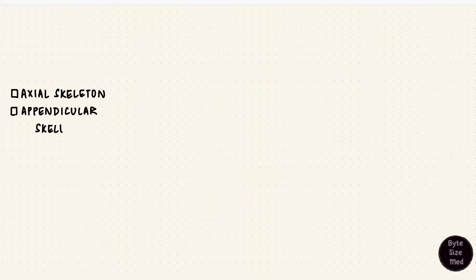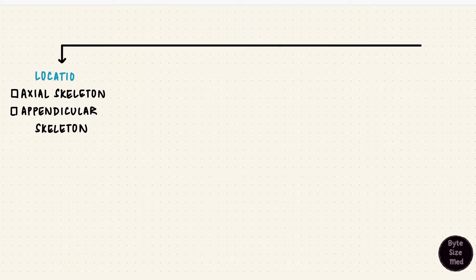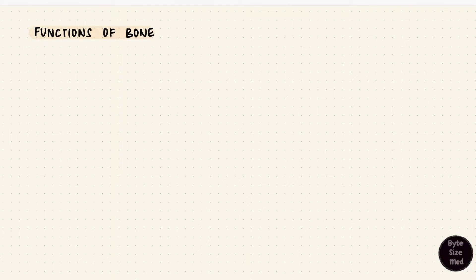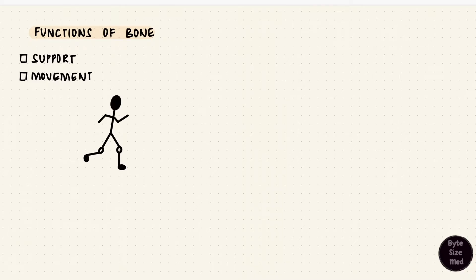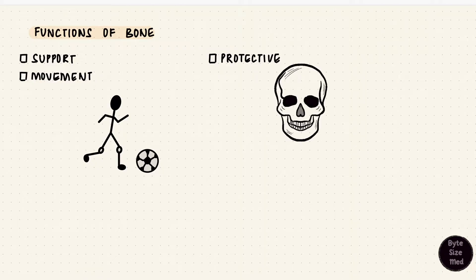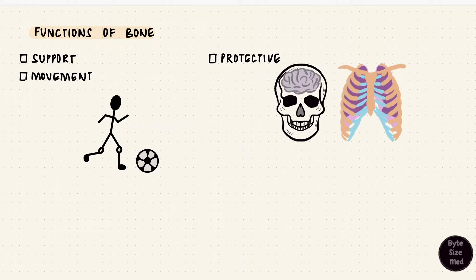That's the axial skeleton and the appendicular skeleton — the first way that bones can be classified. These bones have functions; the most obvious ones we think of are support and movement. The skeletal system is important for support and to help movements happen together with muscles, but bones can also be protective in function, like the skull bones and the thoracic cage, which have organs inside them that they protect.